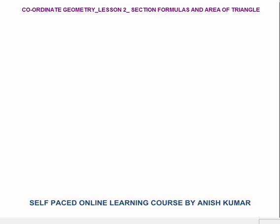Hello, this is Coordinate Geometry lesson 2. In this I will discuss section formulas and area of triangle. Section formula means we will first discuss internal division. There will also be external division, and these internal division and external division are called section formulas.